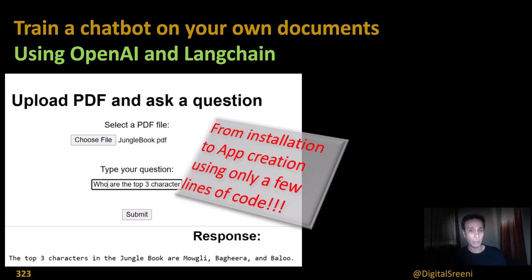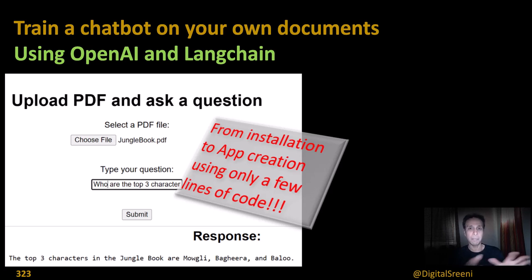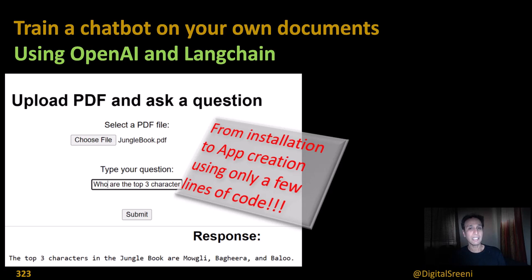With just a few lines of code you say: here are my documents — PDFs, text, Word files — train it, and I'm going to ask questions where the answers must only come from these documents. That's the first thing we're going to do. The next step is to deploy this as an app locally using Flask. Finally, we'll use Streamlit, which makes creating a local app much easier compared to Flask, although Flask is a bit more scalable.